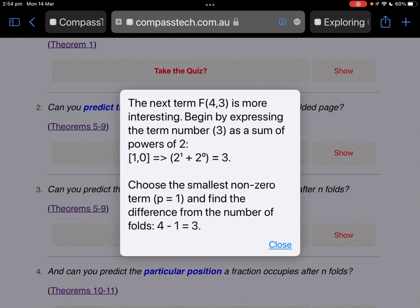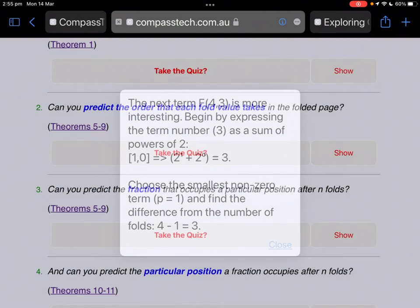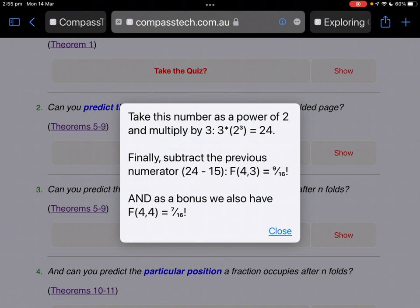Now the next term is more interesting. It's the third term of this set of folds. So we'll begin by expressing the term number 3 as a sum of powers of 2. How do you express 3 as sum of powers of 2? It's 2^1 plus 2^0. 2 plus 1 is 3. Choose the smallest non-zero term, that's p equals 1, and find the difference from the number of folds. Now it's 4 folds, 4 minus 1 is 3. Take this number as a power of 2, that's 8, and multiply by 3, 24. Why? Well, that's for further investigation. Now subtract the previous numerator, which was 15. 24 minus 15 is 9, 9/16. And if we've got 9/16, we also have the next one, because they will add up to 16. So 9/16 and 7/16.